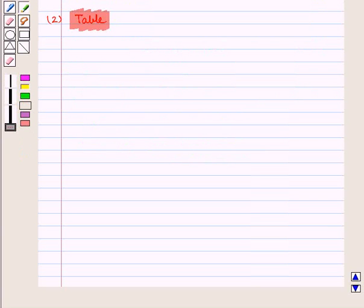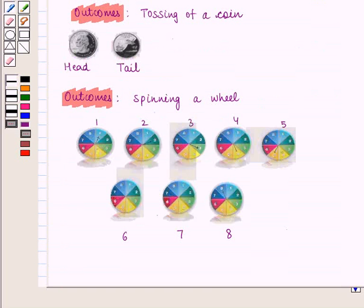Next, we have table. Let us form a table for the outcomes. The rows represent the outcomes for the coin, that is head and tail. And the columns represent the outcomes for the spinner, that is 1, 2, 3, 4, 5, 6, 7 and 8.